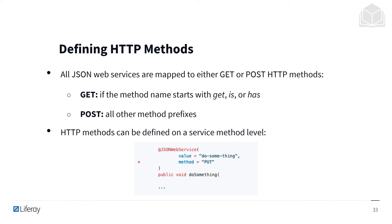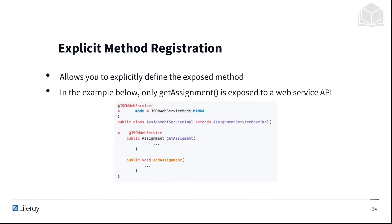HTTP methods can be defined on a service method level, as pictured in the example. By setting the JSONWebServiceMode to manual, the methods to be exposed can be declared manually. In the example below, only the get assignment method is exposed to the web service API.